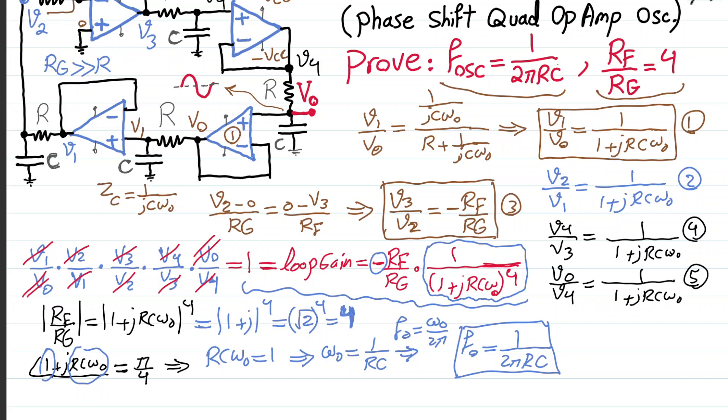So, we found it. Basically, we proved that the absolute value of gain, R_F over R_G, should be 4 in order to have a loop gain of 1 so that we have a stable theoretical oscillation and then the frequency of oscillation is also found here.